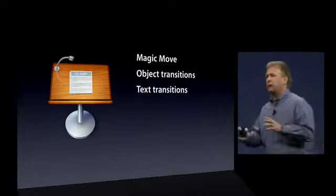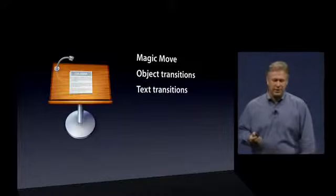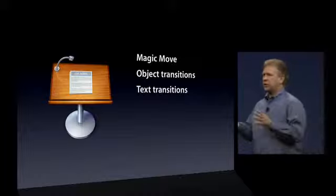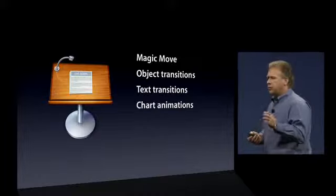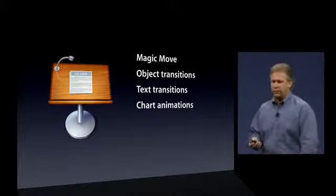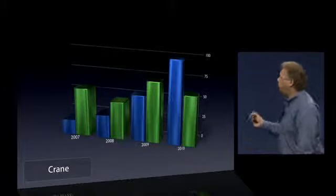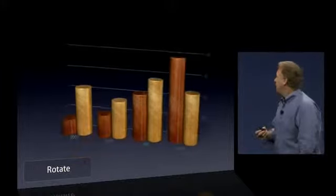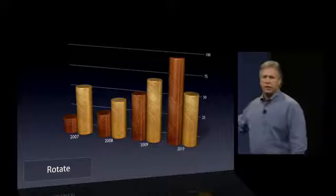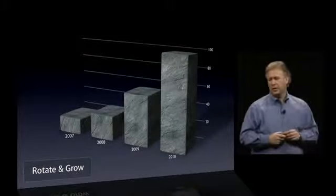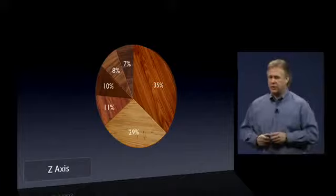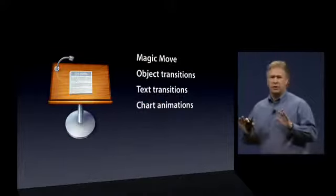In addition to Magic Move and object transitions, we also have animations on charts. The charting in Keynote is the best there's ever been in a presentation application — beautiful charts with incredible textures, and these new chart animations bring your charts in and out in an incredible way. First up: a Crane move with a beautiful metallic shine. Next: a Rotate with etched metal and a new cylinder chart shape. Then: a Rotate and Grow using a new stone texture. And finally: a zoom through the Z-axis of a pie chart using new wood textures.